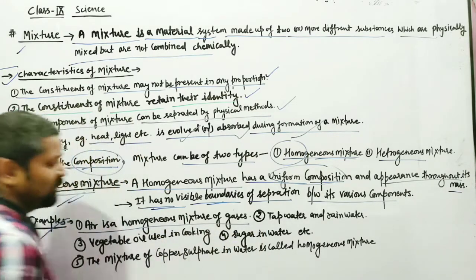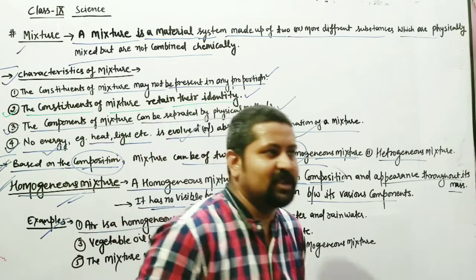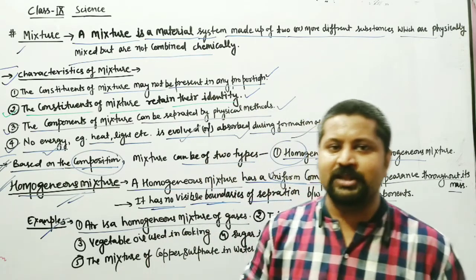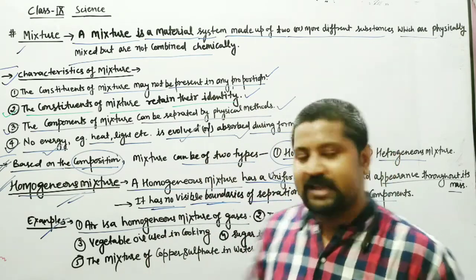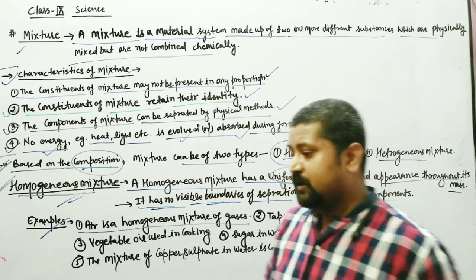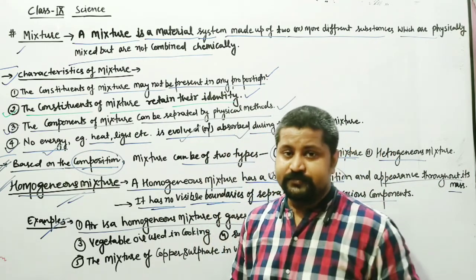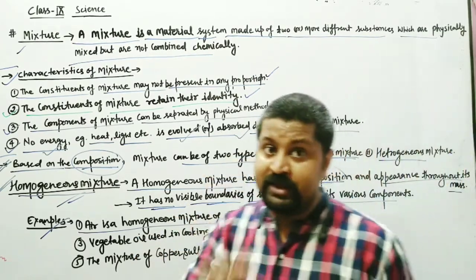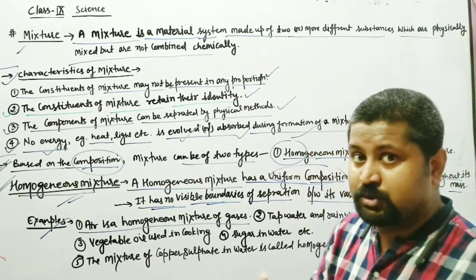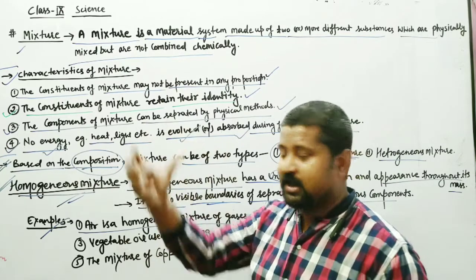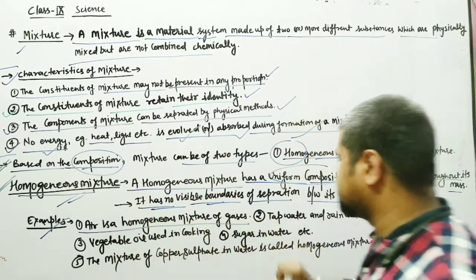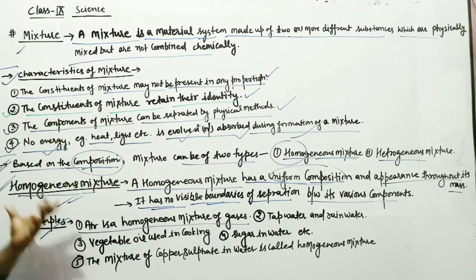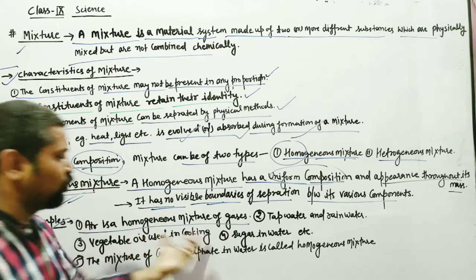Examples of homogeneous mixture: first, homogeneous mixture of gases — air. Air contains nitrogen, oxygen, noble gases, and many other gases which are mixed together. These cannot easily be separated out by physical methods; a chemical method is needed, and that is not very easy.